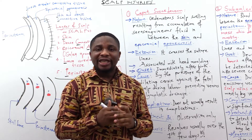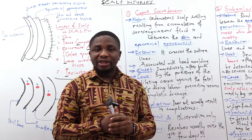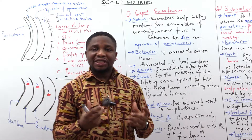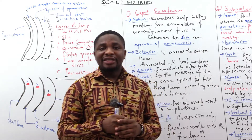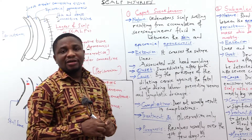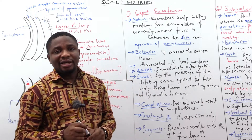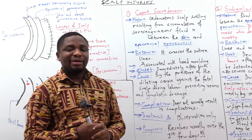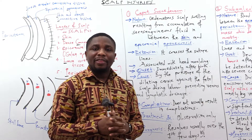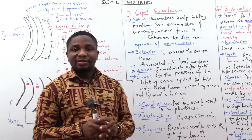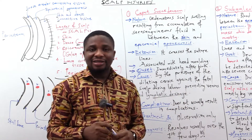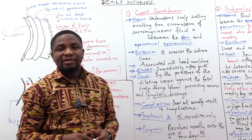Caput succedaneum is also associated with head molding. Molding is the overlapping of the bones of the fetal skull so as to present the leads of diameter into the pelvic inlet during labor. Caput succedaneum is caused by the pressure of the dilating cervix on the fetal skull during labor, which prevents venous and lymphatic drainage, and that is the reason for the swelling.